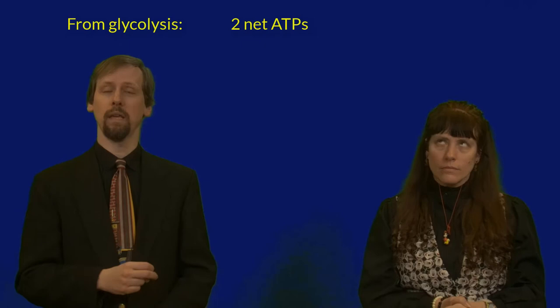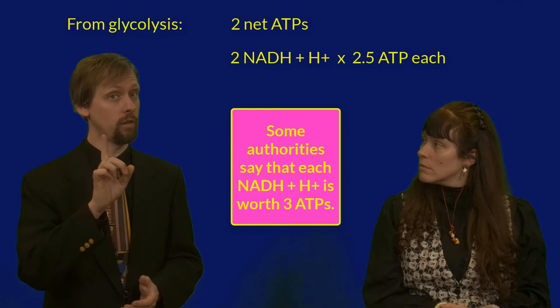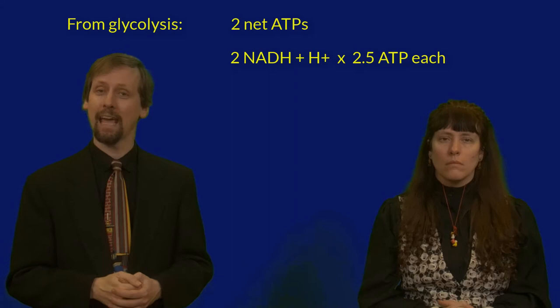Let's tally up those ATPs. We got two net ATPs from the glucose molecule during glycolysis, along with two NADH plus H pluses. The NADH plus H pluses are worth two and a half ATPs each, if oxygen is around so the electron transport chain can do its thing. Otherwise, we'll end up doing anaerobic fermentation and making lactic acid instead.